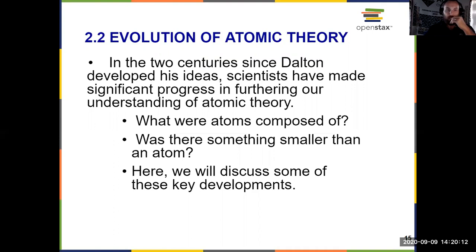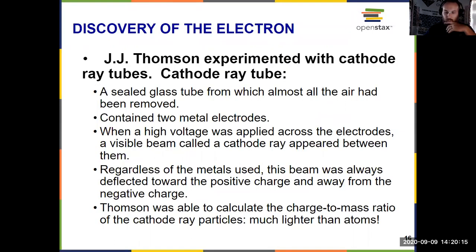And the first thing that was discovered in answering the question definitively that there was something smaller than the atom were electrons. And electrons came from J.J. Thompson and his cathode ray tube experiments. So a cathode ray tube, we've got a diagram of one on the next slide here. It consists of a sealed glass tube, vacuum, meaning all the air has been removed, with two metal electrodes.